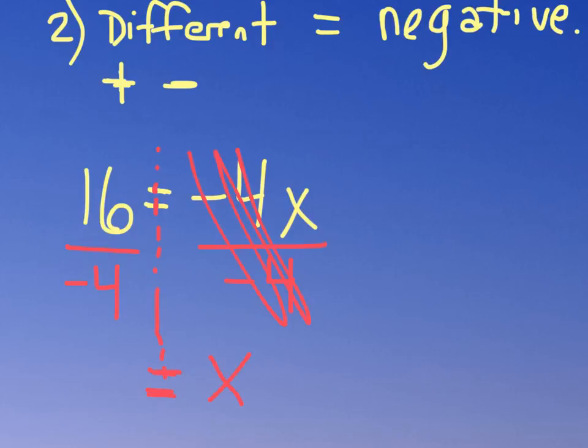Now, these will cancel out. And we'll be left with x equals 16 divided by negative 4. Now, I know that 16 divided by 4 is 4. And since we're dividing a positive by a negative, those are different signs. So, our answer will be negative. So, x would be negative 4 in this case.